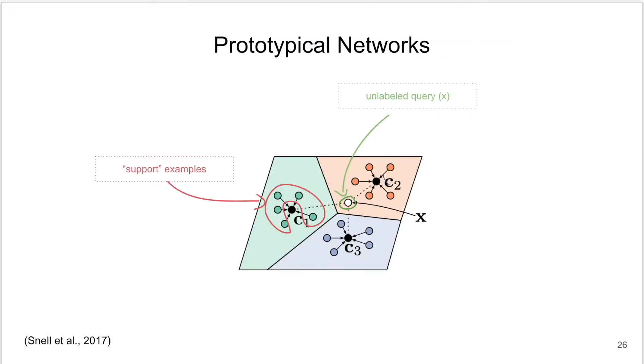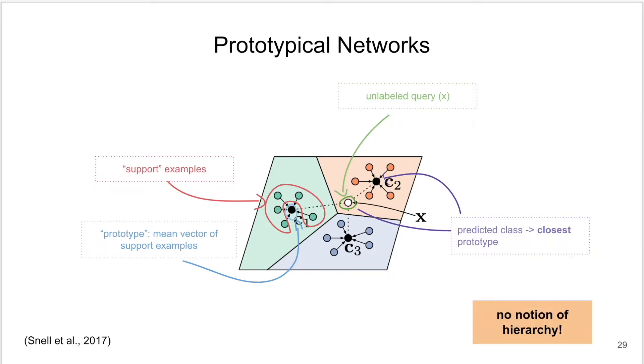Our work built on prototypical networks, which form a class representation or prototype by taking the mean of all support examples for a given class. We classify an unlabeled query example by finding the closest prototype. This approach, however, does not take into account a hierarchical structure between class labels, which could be useful when classifying musical instruments.